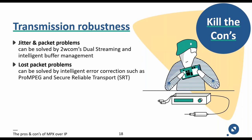The second challenge is lost packet protection, which can be solved by intelligent error correction such as Pro-MPEG FEC or Secure Reliable Transport — SRT. A proven mechanism is Pro-MPEG error protection, where sent packets are organized in a matrix structure at the encoder to calculate correction packets over rows and columns. A newer but very robust protection method is SRT — Secure Reliable Transport — which however requires a bidirectional IP connection.